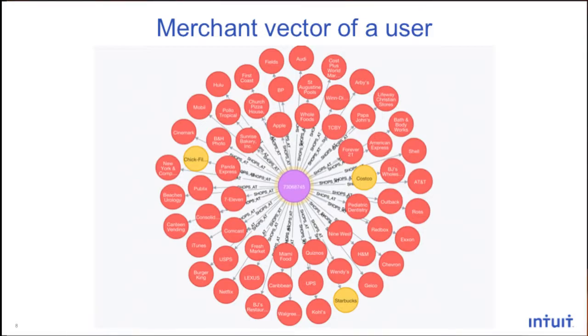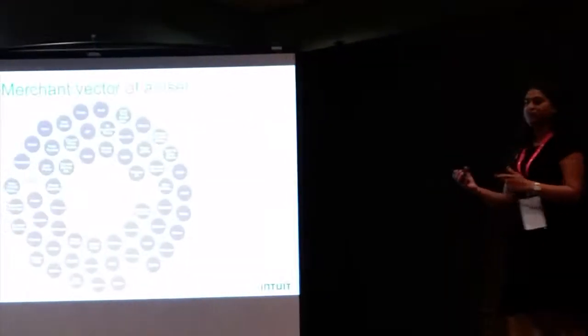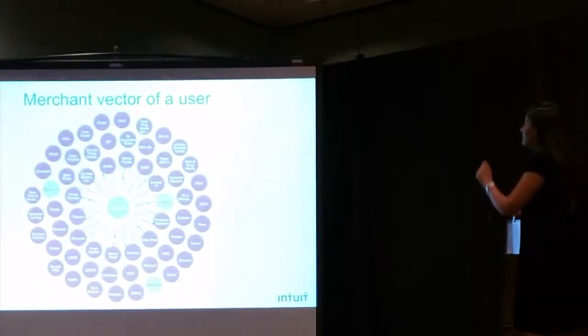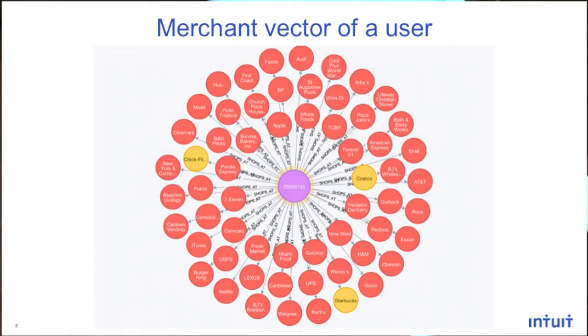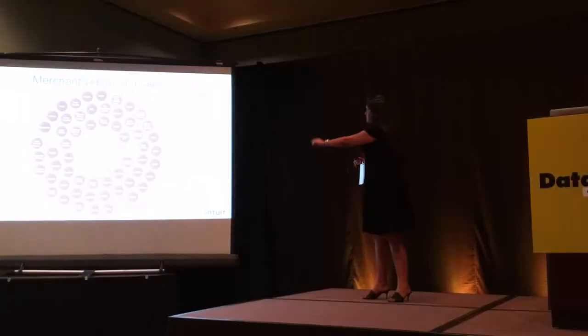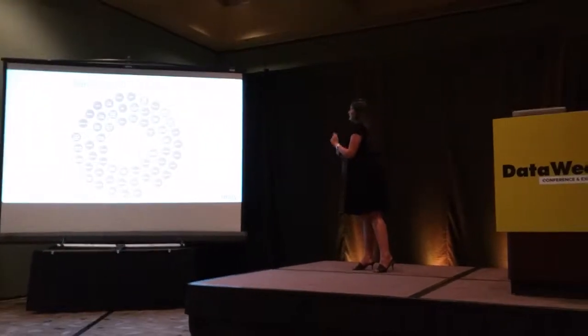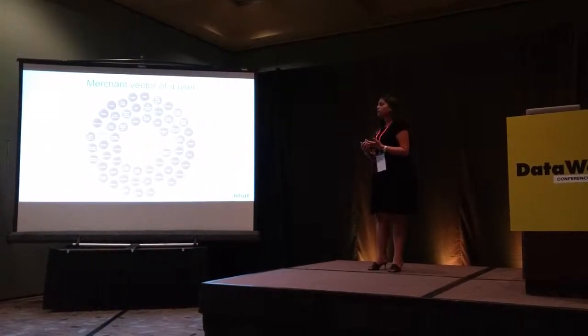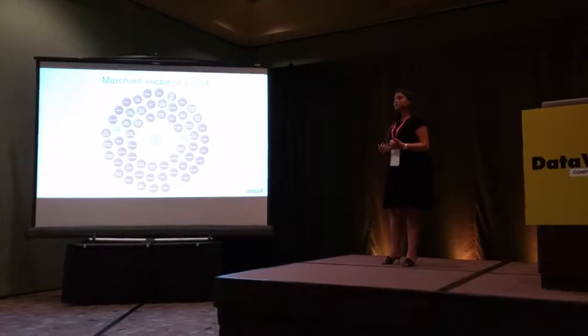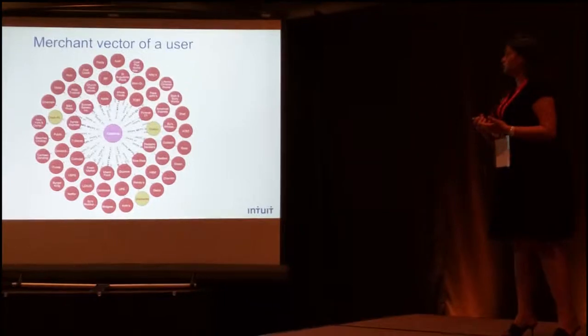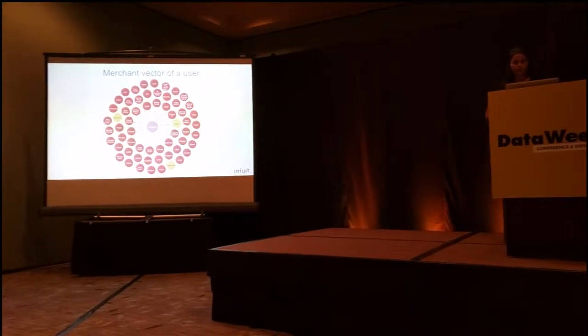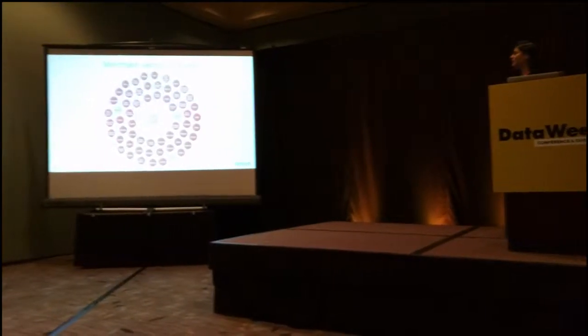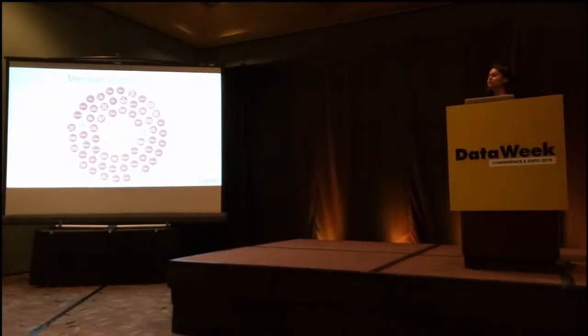Looking at this example, the pink node is the user node, and this user is connected with different merchants shown in red — Forever 21, Nine West, 7-Eleven, and Whole Foods. The edges between the user node and the merchant node represent ShopSat relationships, which contain metadata like how frequently this user visits the merchant and the amount being spent. Looking at this example, this user has a very diverse spending pattern spread across all sorts of categories.